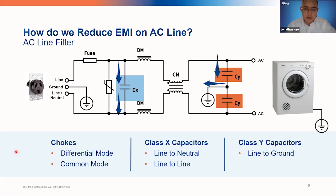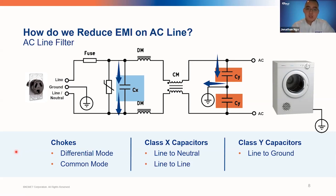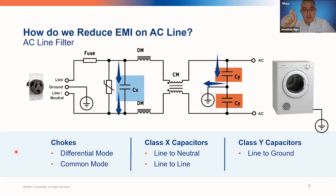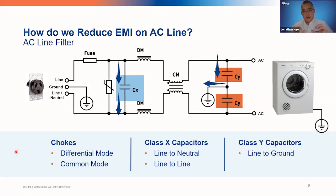Moving to the second stage of the EMI filter, we have the Y capacitors. The Y capacitors are placed line to ground, and it's important to note that ground is actually the chassis or the metal enclosure for the dryer. This is very important because if this capacitor were to fail short, and someone touches the dryer, they could be electrocuted, which could potentially result in death. So we need to be very careful when choosing the capacitors for the Y and X locations in the circuit.